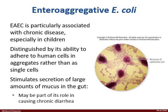EAEC will clump together on the surface of the epithelial cells lining the large intestine. Their presence there, as well as some of the metabolic products they produce, will stimulate the epithelial cells to pump out fluid. The more fluid that is pumped out, the greater the chance that the EAEC will pass into the water source to be drunk and ingested by the next host.